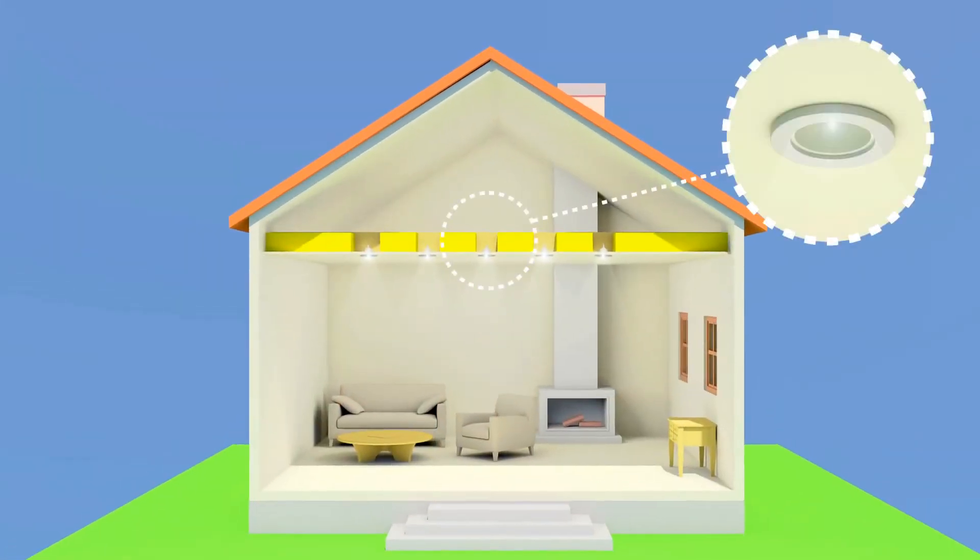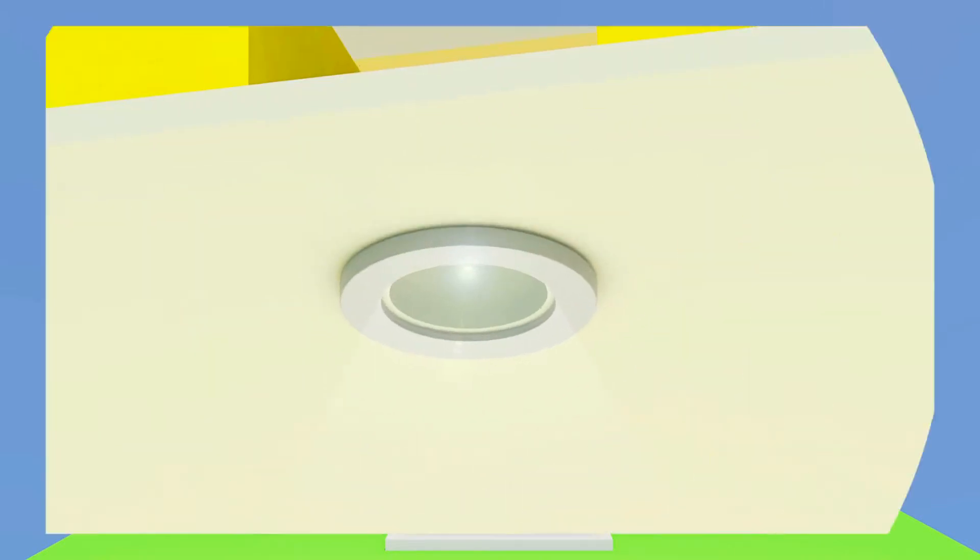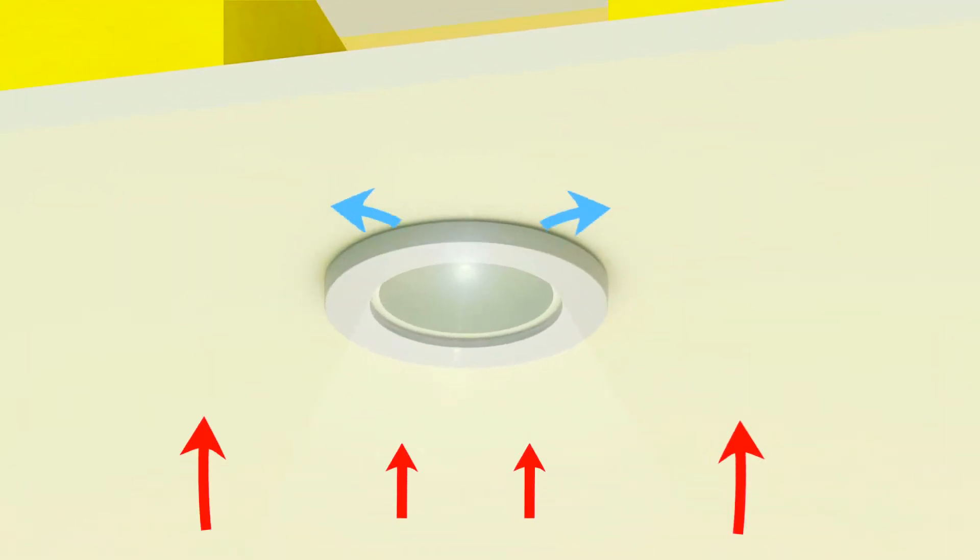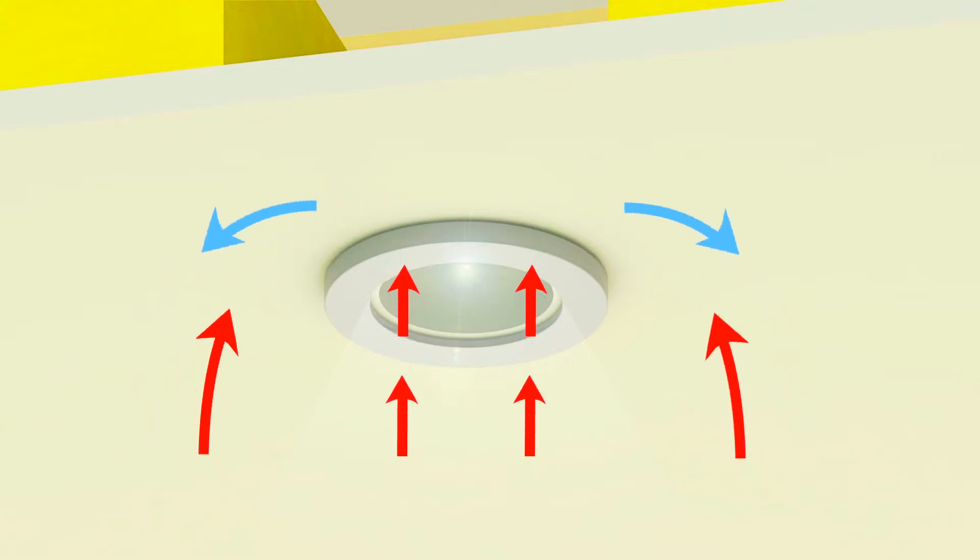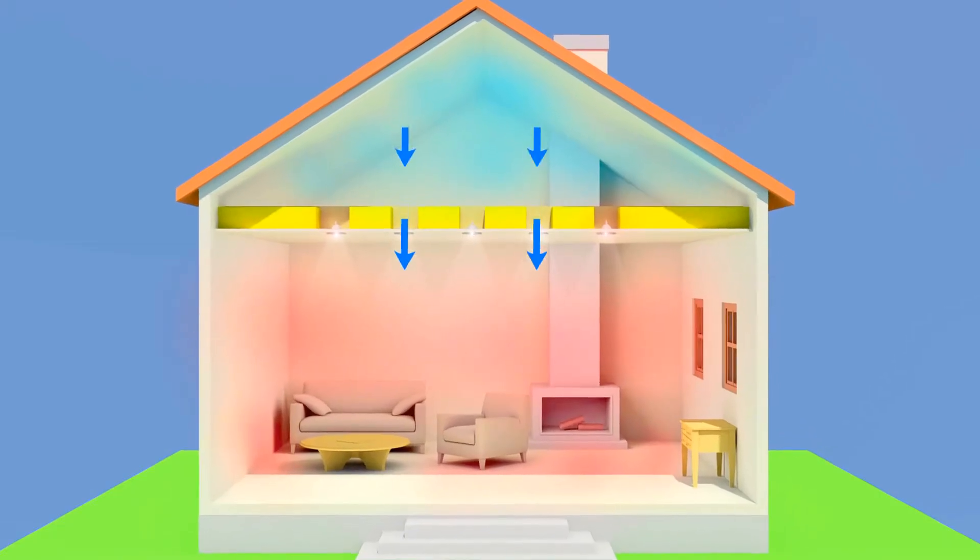Downlights in attic ceilings are a very weak point in the fight against heat loss. Gaps between the light fitting and plasterboard allow warm air to escape, and cold air to enter the living room.